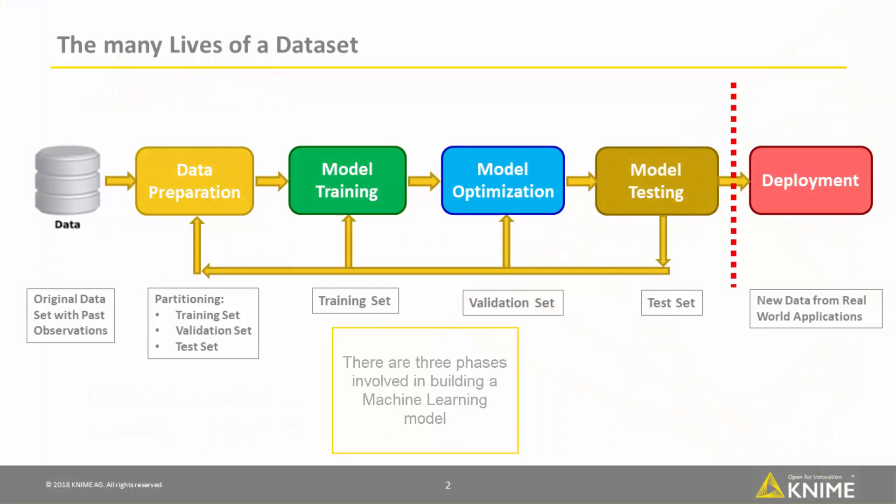There are three phases involved in building a machine learning model: model training, model optimization, and model testing. Each one of these phases works on a separate subset of the original data: the training set, the optimization set, and the test set.